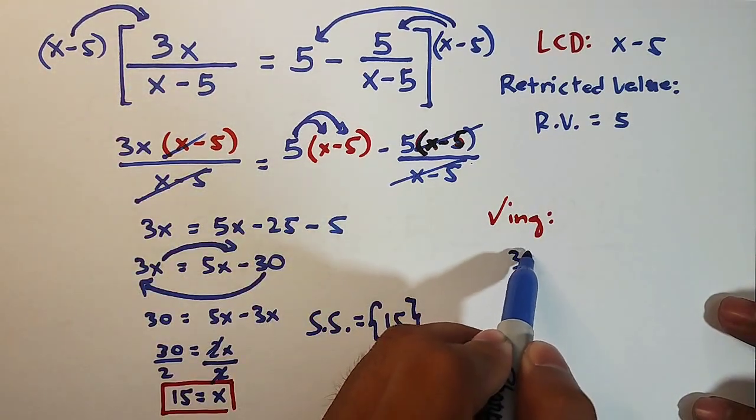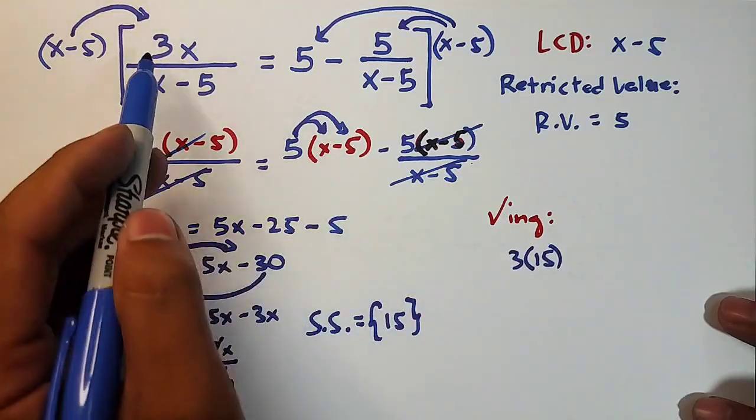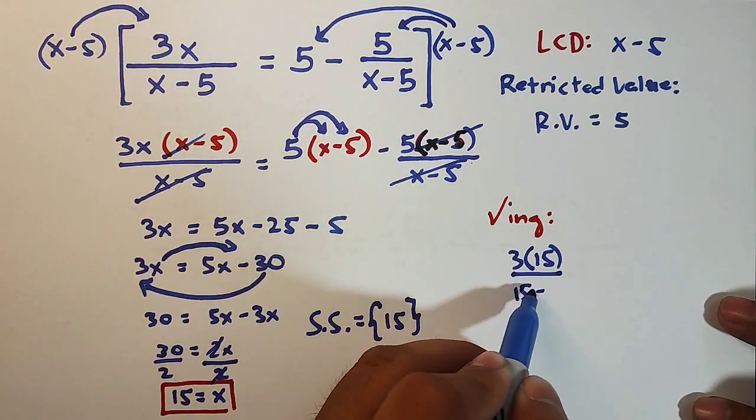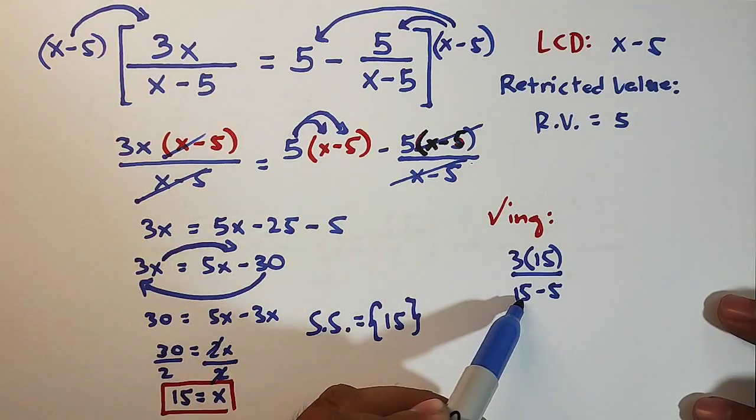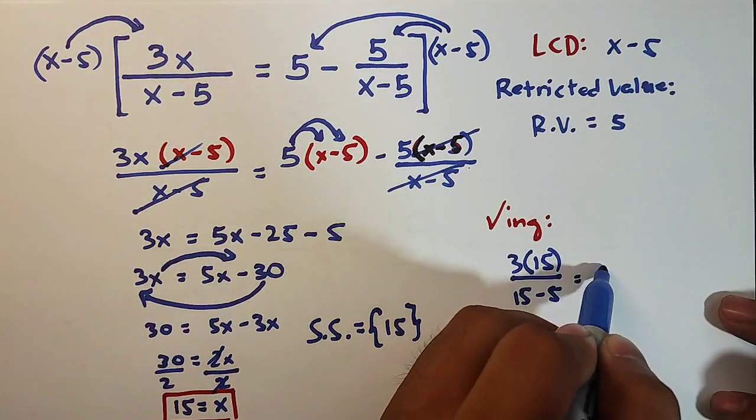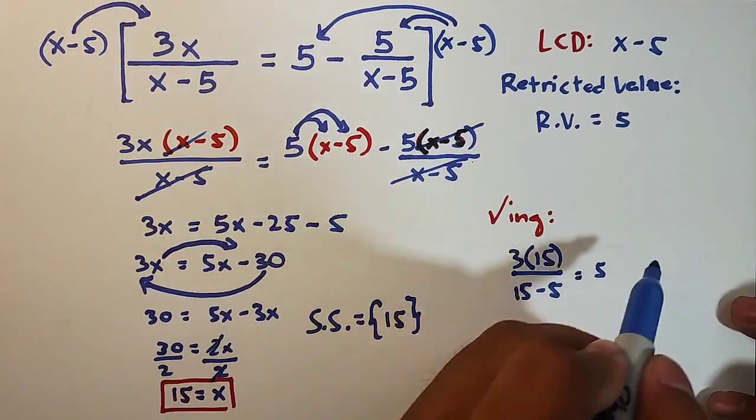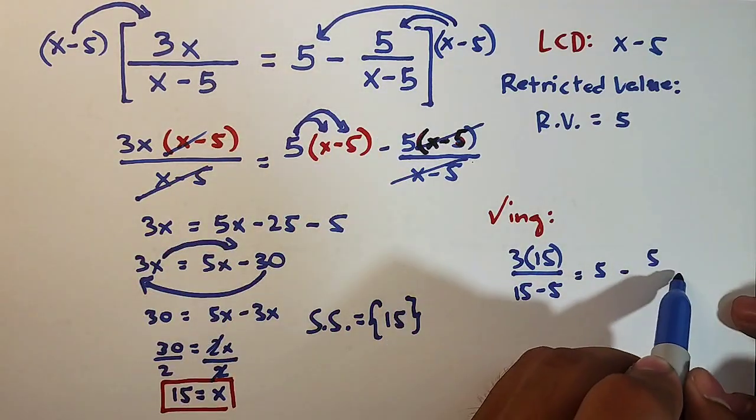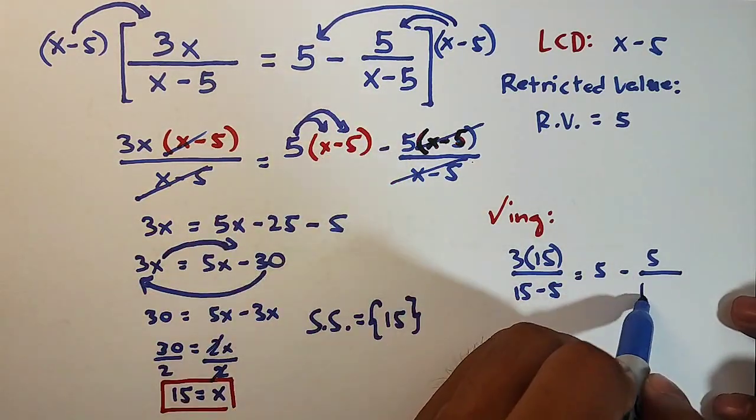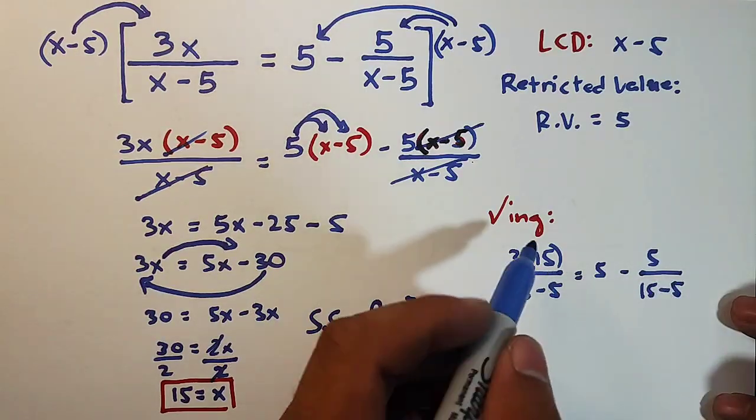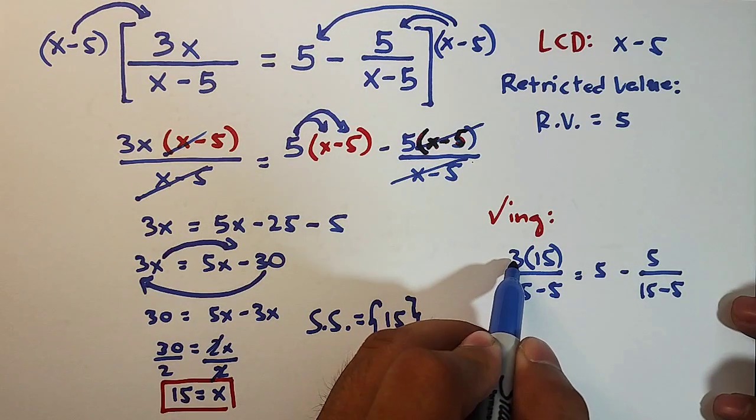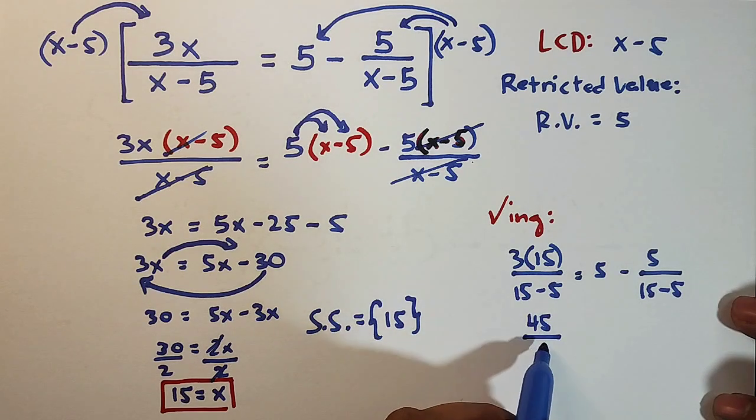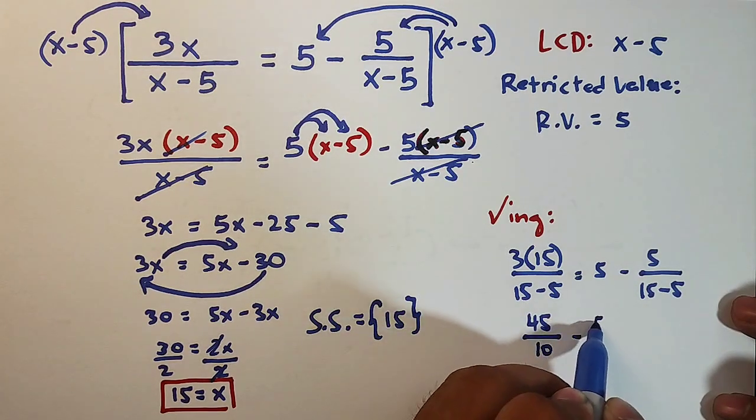So it will become 3 times 15. Okay, 3 times 15 over 15 minus 5. So this is your x, it will become 15. It's equal to 5. Okay, 5 minus 5, I'm copying the original equation, over this is 15 minus 5. Simplify. 3 times 15 is 45 over this is 10 minus 5.